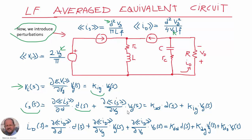In the same way, we can calculate the perturbation in the current through the switch by taking the different partial derivatives, which depend on the perturbations in the duty cycle and the peak line voltage. Similarly, the perturbation in the current through the diode depends on the perturbations of the duty cycle, peak line voltage, and output voltage. So at the end we have all these parameters obtained from the different partial derivatives.